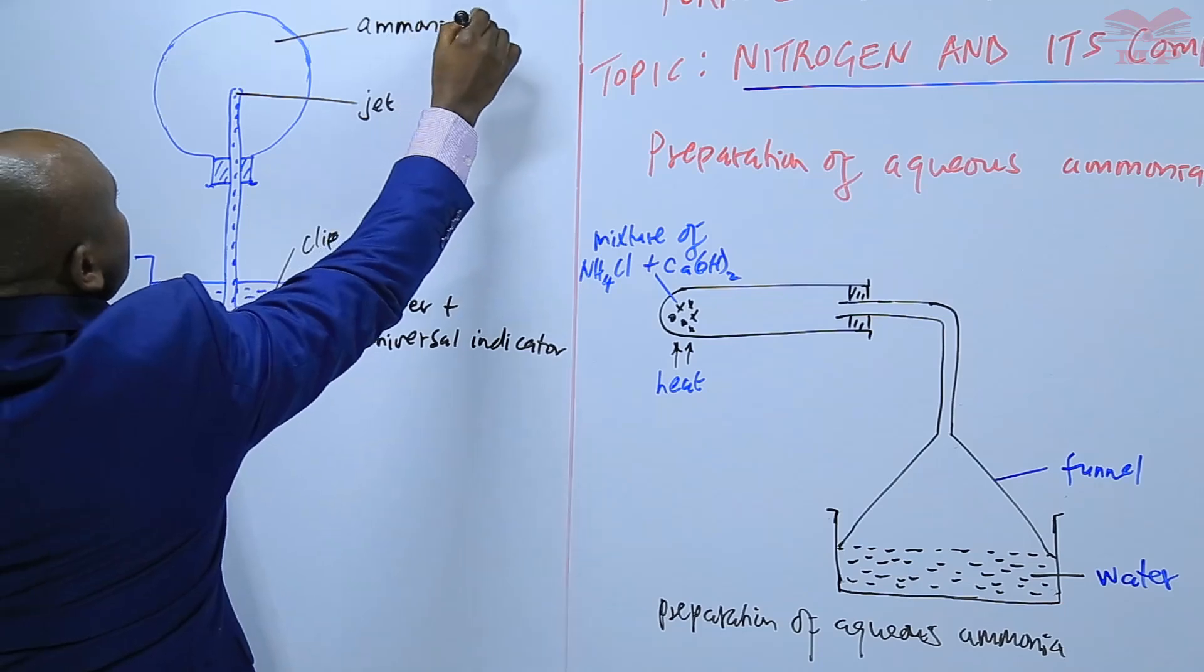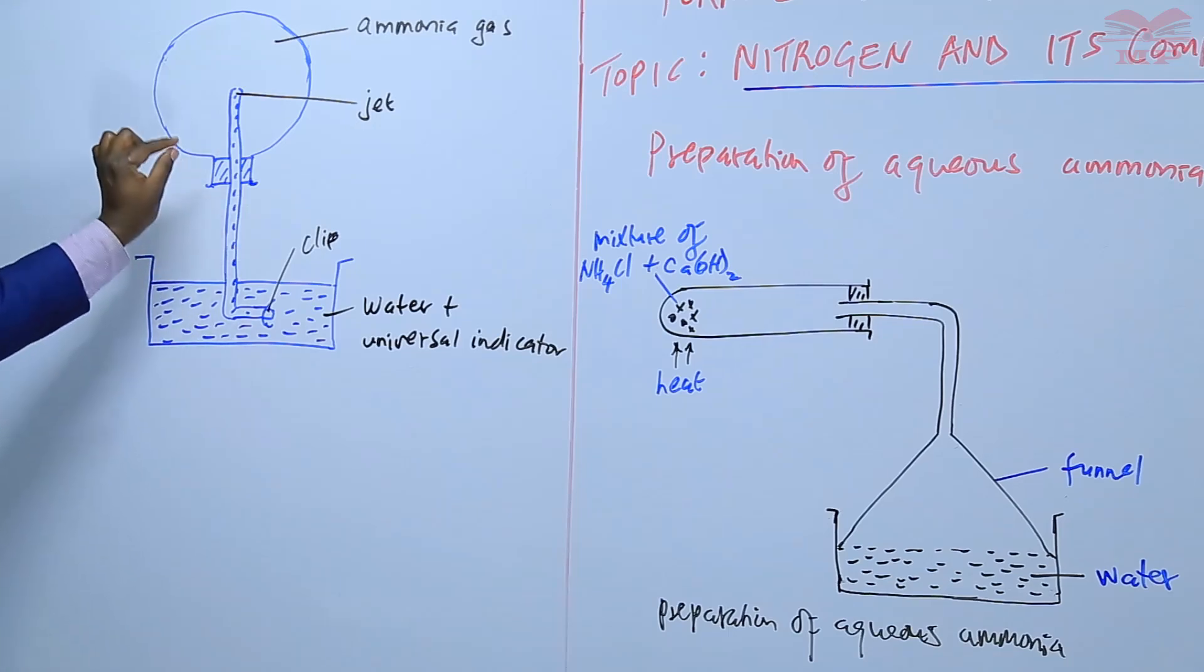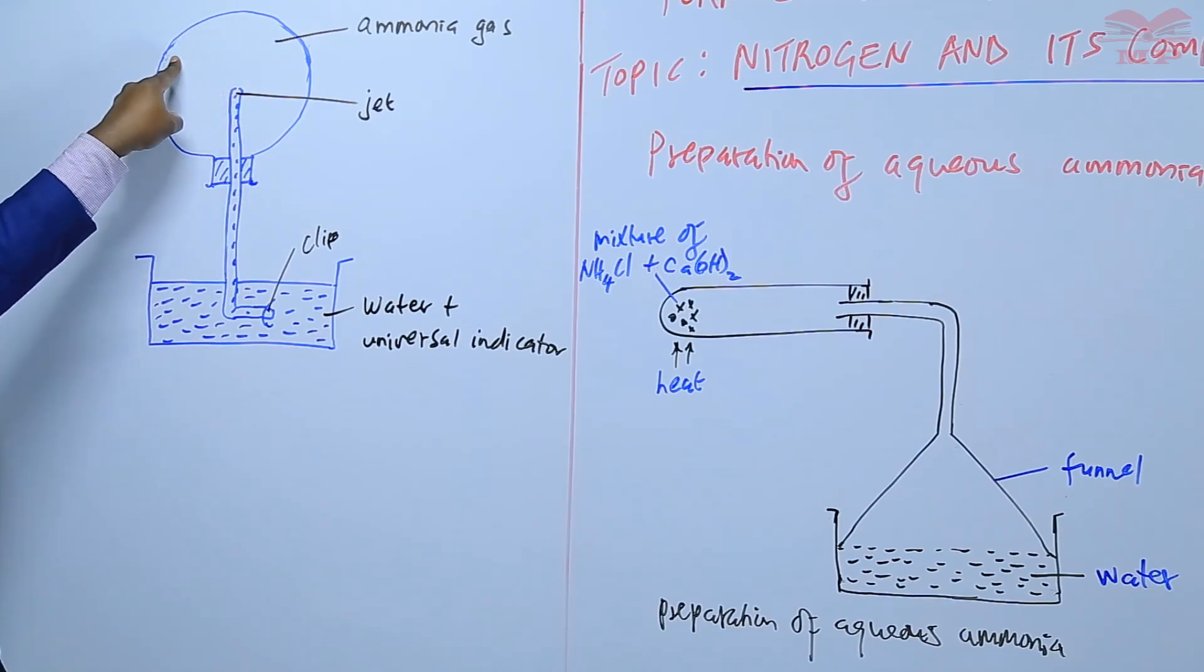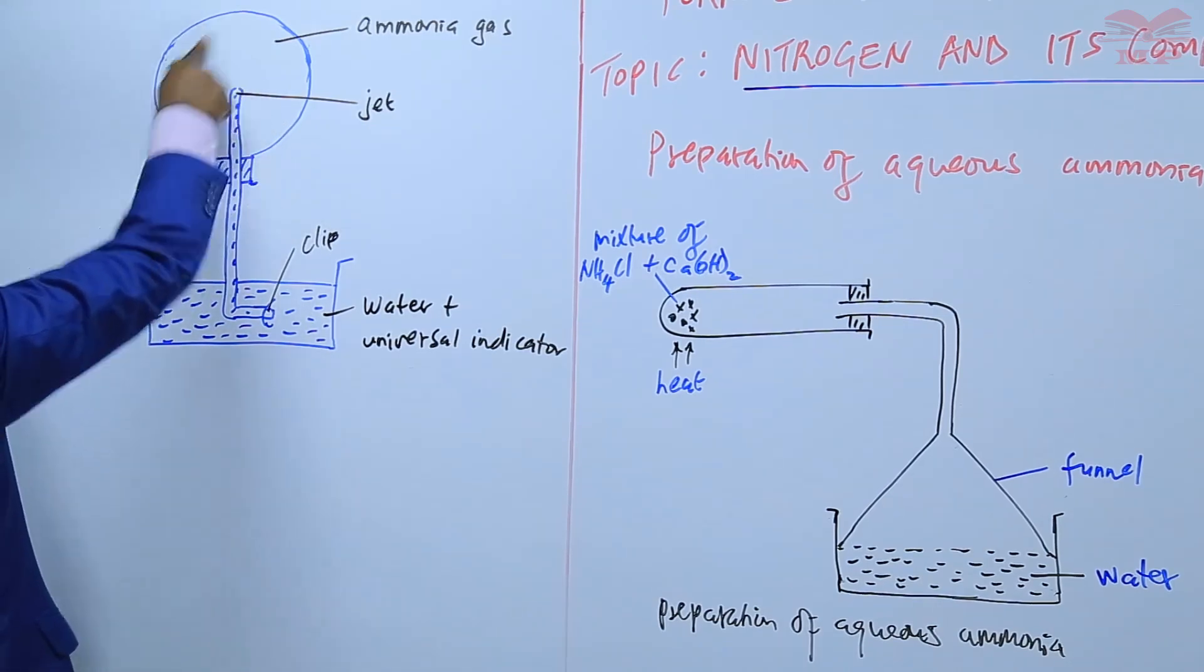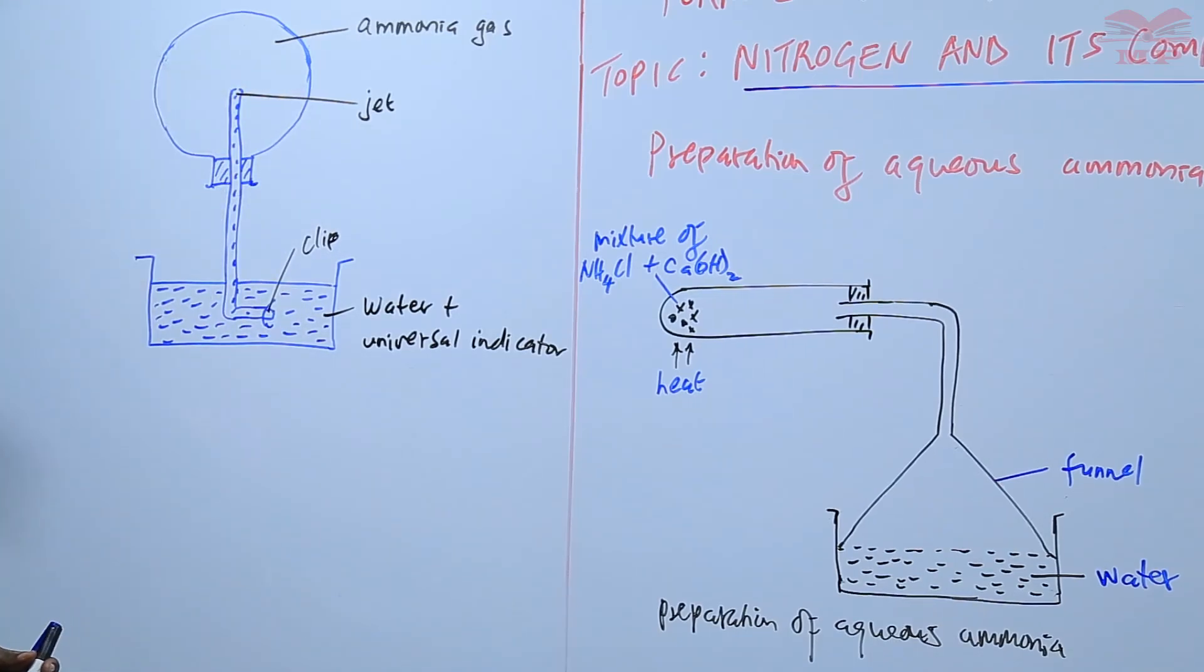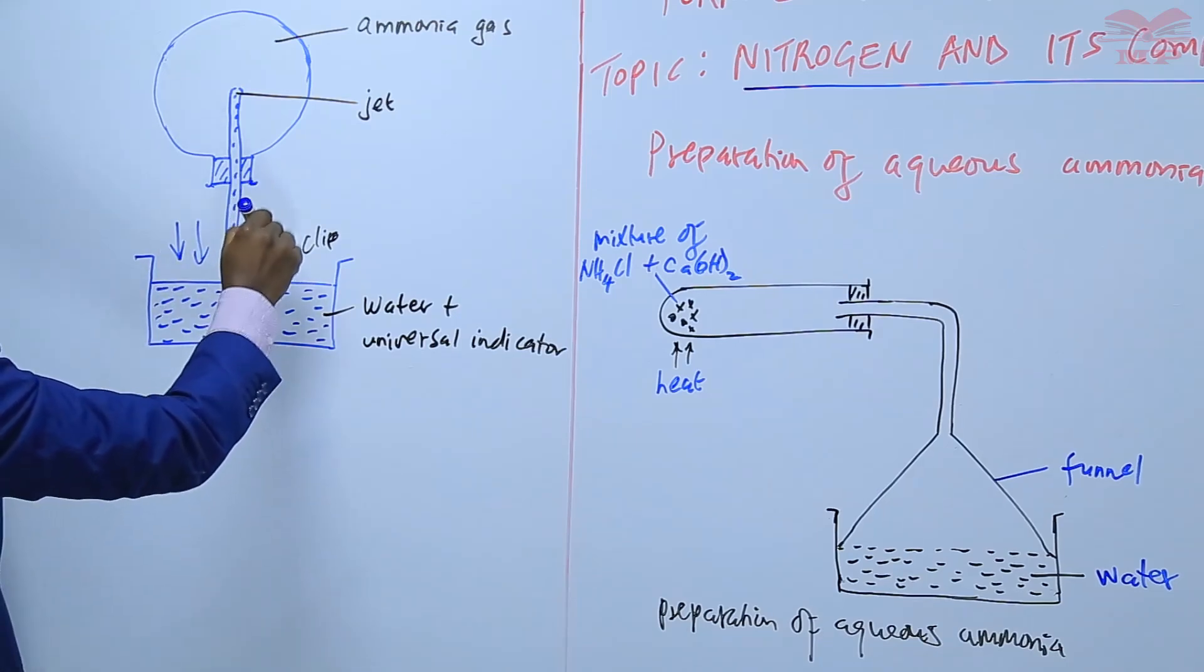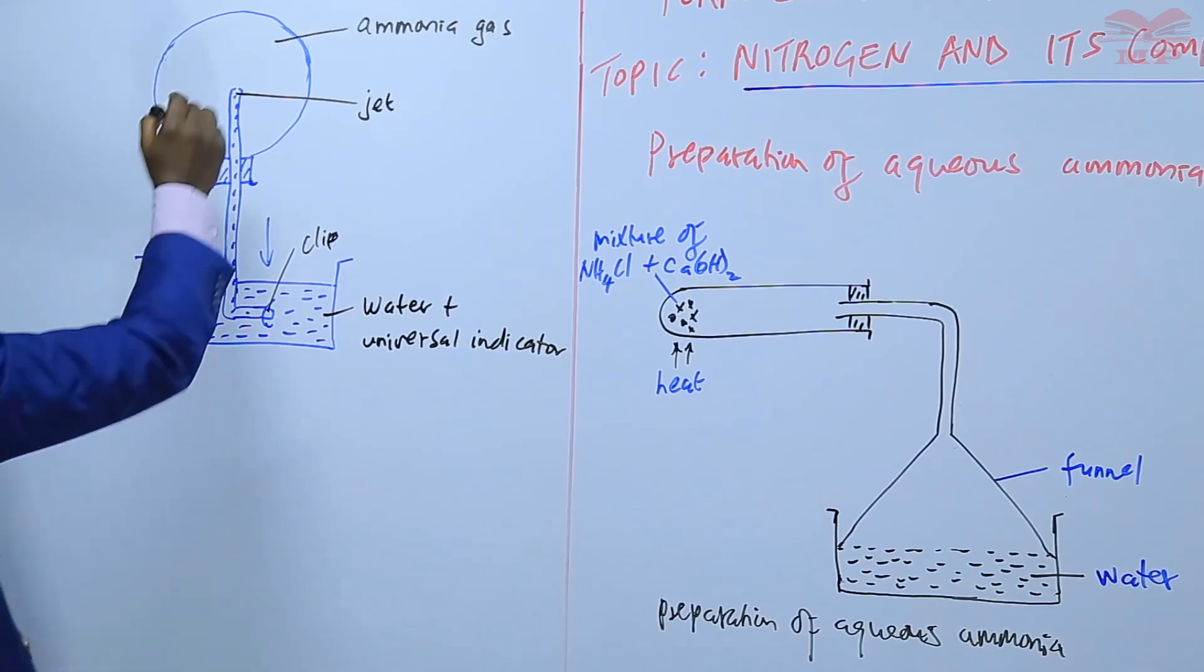So what happens is when the jet is full we should open the clip to release only one drop of water plus universal indicator into the flask. And once that drop of water gets into the flask it dissolves all the ammonia gas that is in this flask and that creates a vacuum. And because of the atmospheric pressure that is acting on the water here then there is the formation of a fountain.